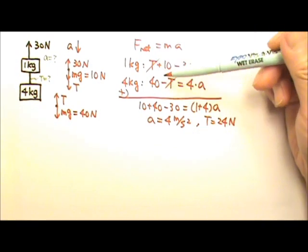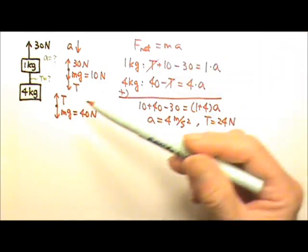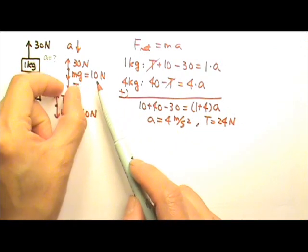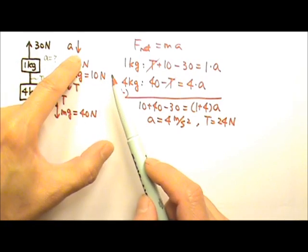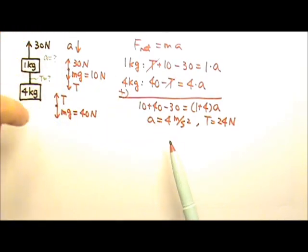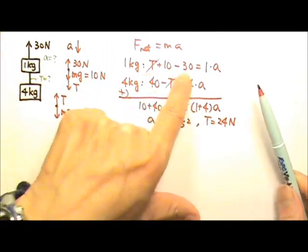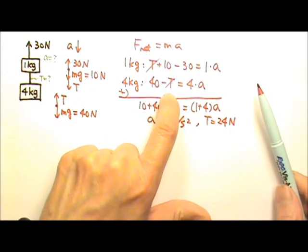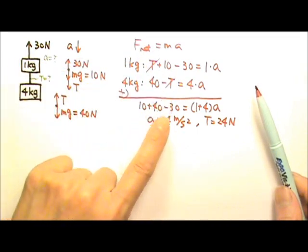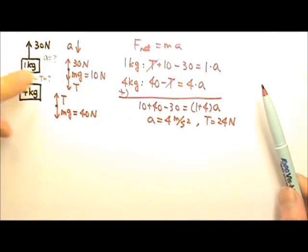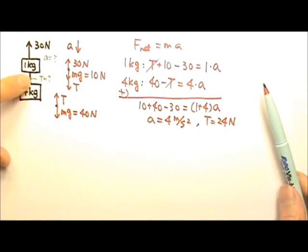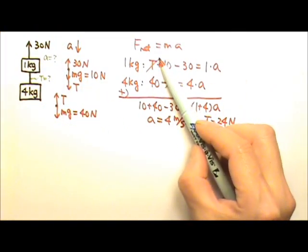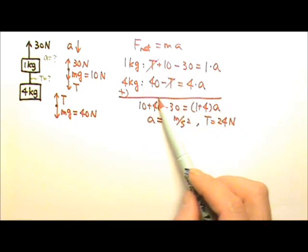The reason the tensions cancel is because they are equal and opposite action-reaction forces. One tension is in the direction of acceleration and the other goes against it. So when you write the force equations, tension appears as positive in one and negative in the other. When you add them, they cancel. We say tension is the internal force — it's the force between the two boxes in the system, and internal forces cancel.